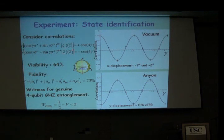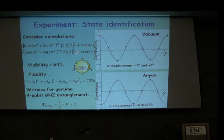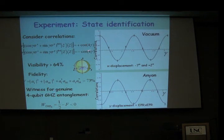All modes get rotated in the XY plane by an angle gamma. Tracing this through, the answer is that for the vacuum state you get cos(4γ), and for the anyonic state you get −cos(4γ). The factor of 4 is because you have an entangled four-qubit GHZ state — if you had a pair of EPR states, you would get a factor of 2 instead. So that's a signature that you have GHZ-type entanglement.